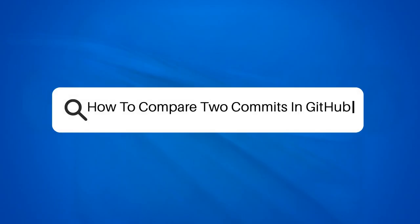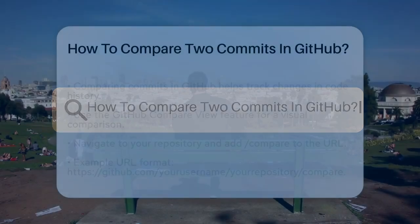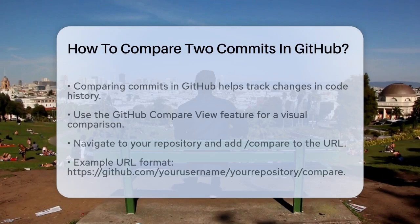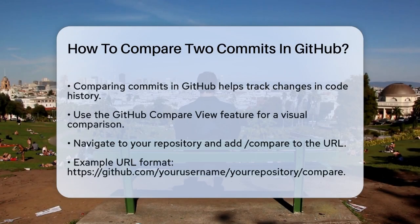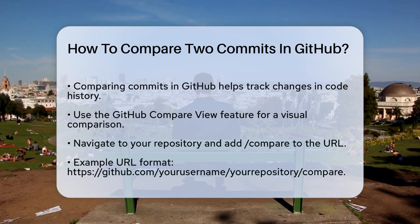How to compare two commits in GitHub. Imagine you're working on a project and you need to see what changes were made between two specific points in your code history. This is where comparing commits in GitHub comes in handy.